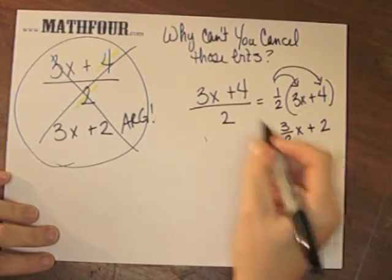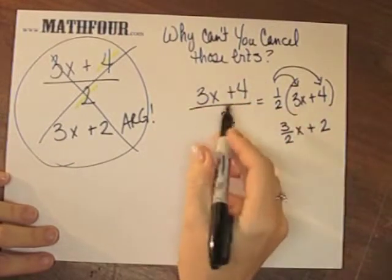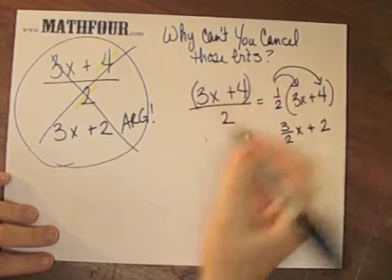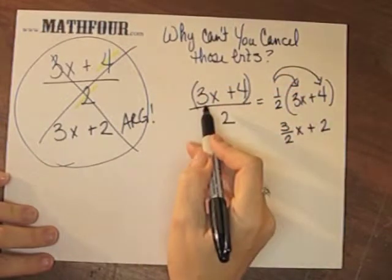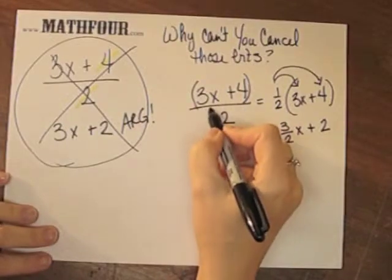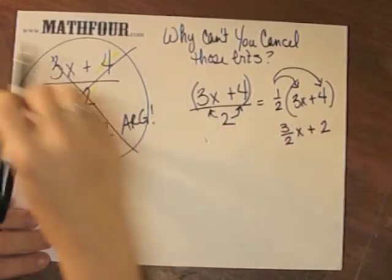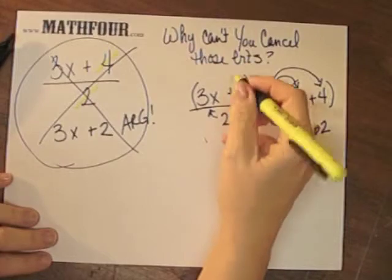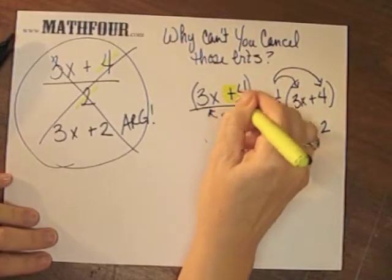So when you have something like this, this parenthesis grouping has to have this guy distribute to both pieces because of this addition-subtraction type thing.